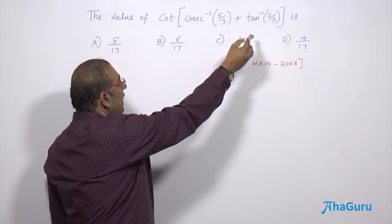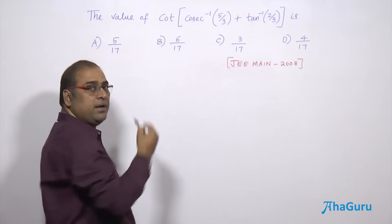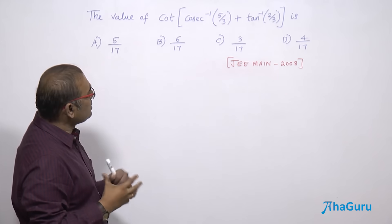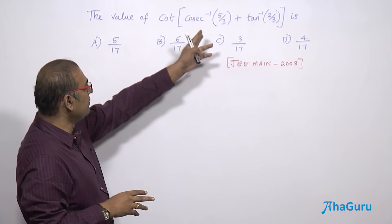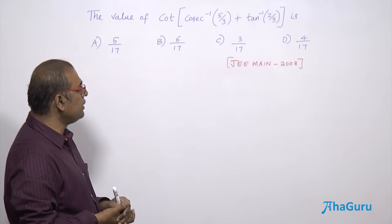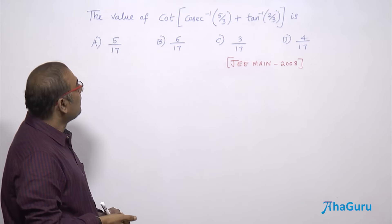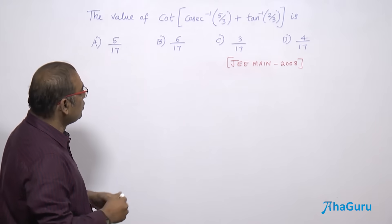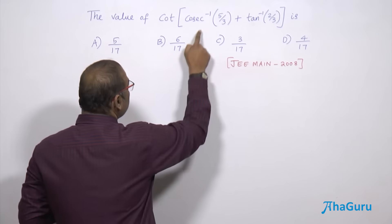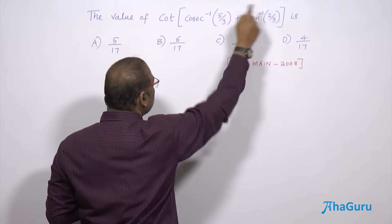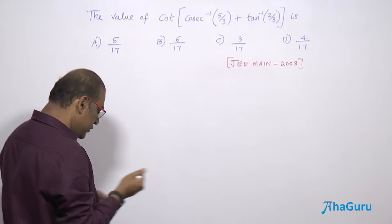We can make it as a single tan inverse, and we know tan and cot are connected. Tan inverse can be written in cot inverse, then cot of cot inverse we can reduce to a final expression. So the first target is to convert this fellow to tan inverse, and then we will try to add this and reduce it to tan inverse.